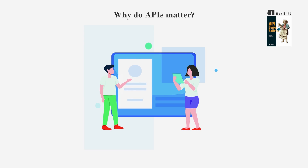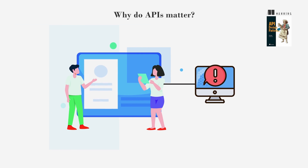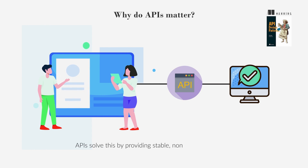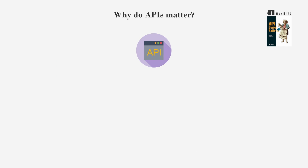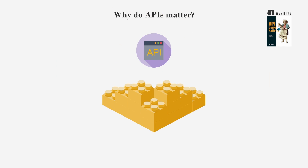Software designed for humans can be problematic for automation because computers cannot easily interact with graphical interfaces. APIs solve this by providing stable, non-visual interfaces that computers can use without being affected by cosmetic changes. APIs also enable the creation of complex systems by allowing functionalities to be combined like Lego blocks, and these systems can then be reused for future projects.